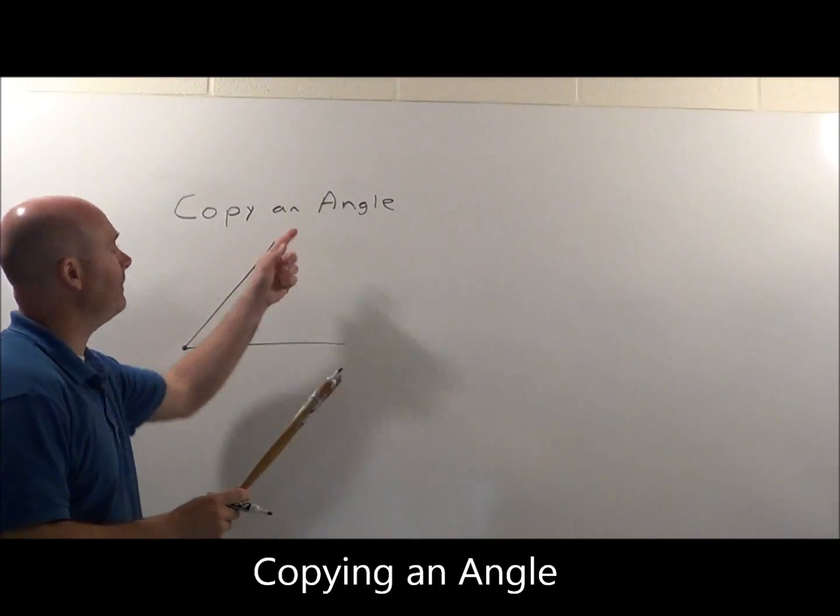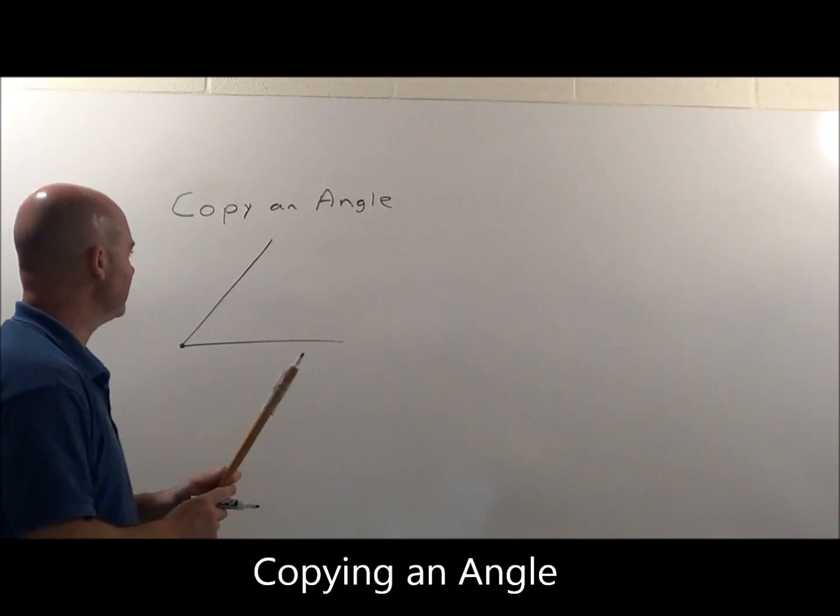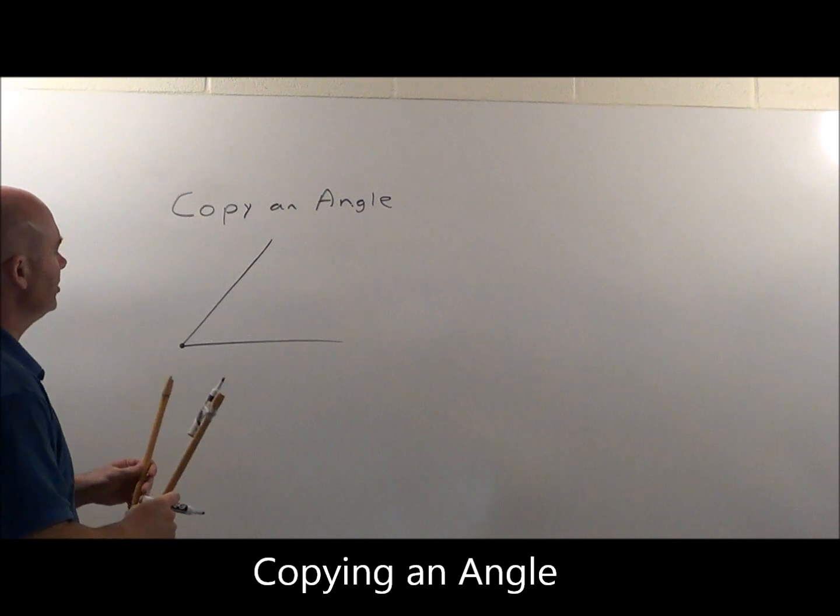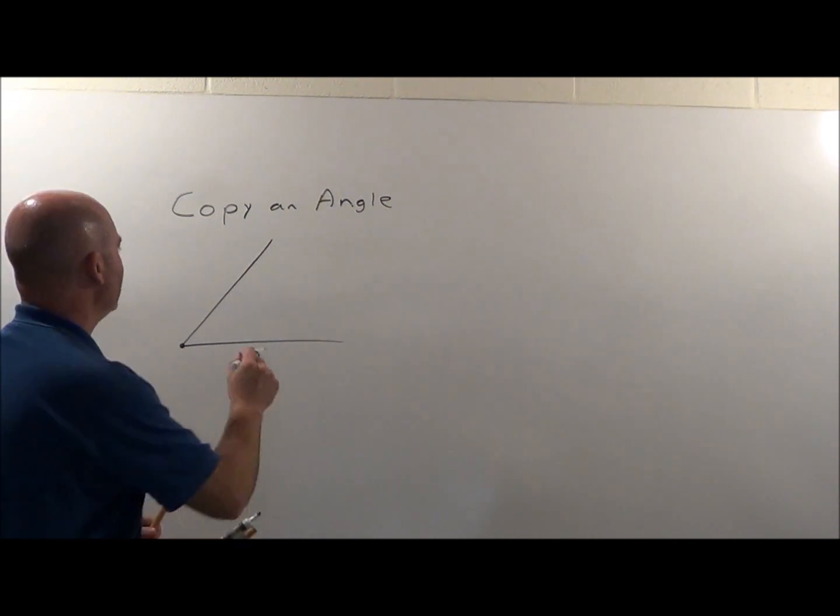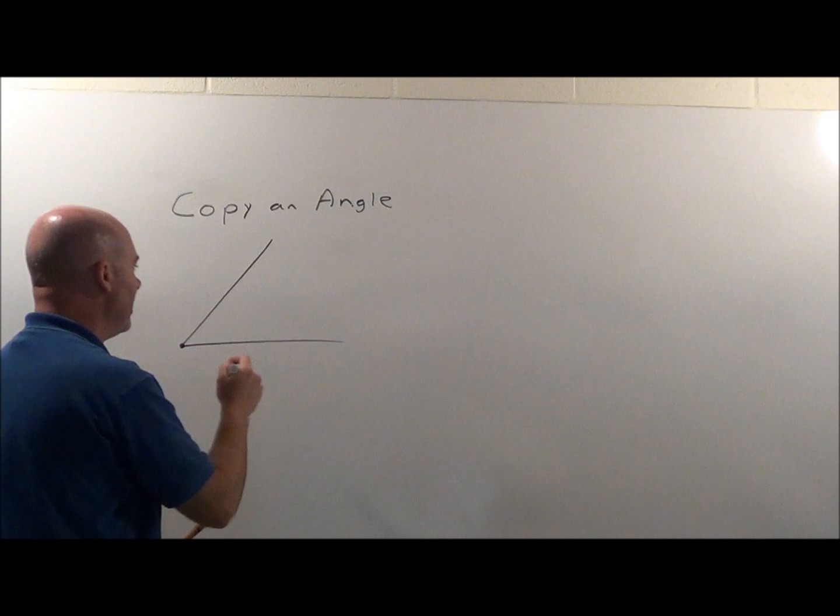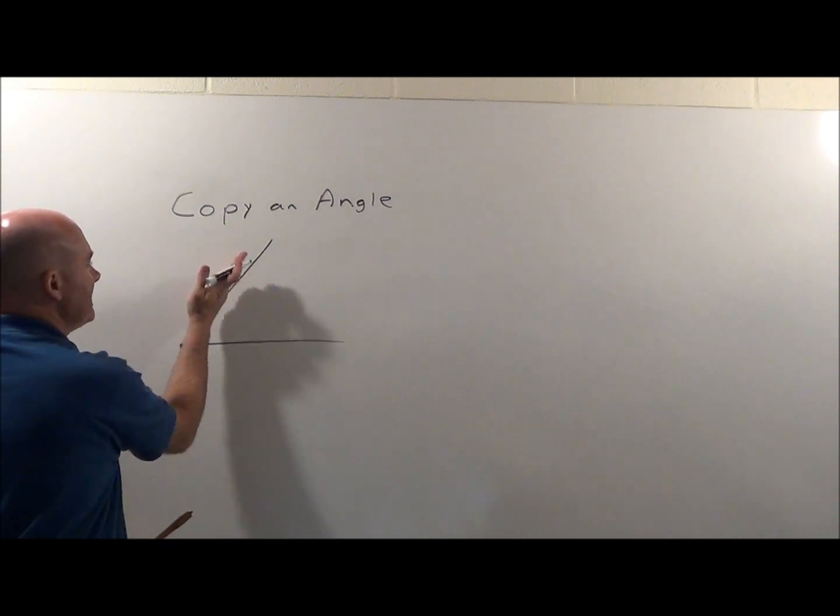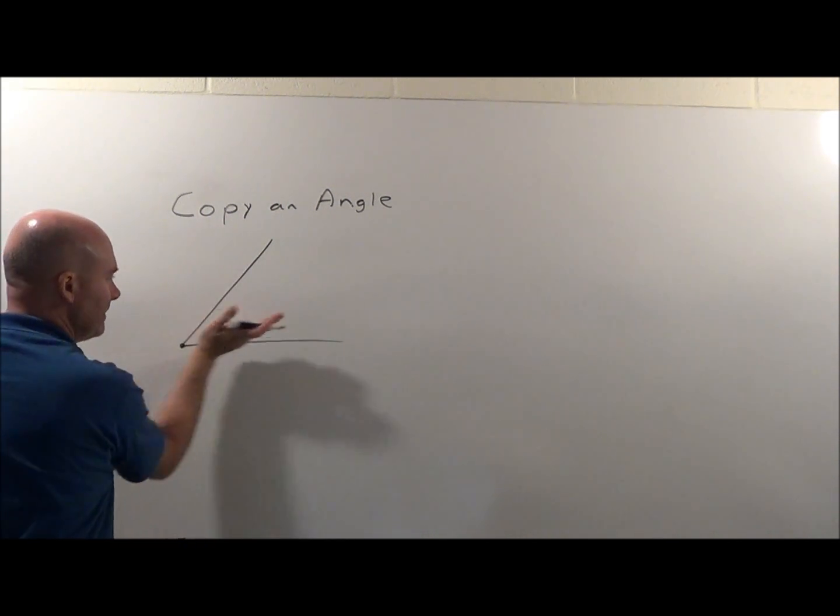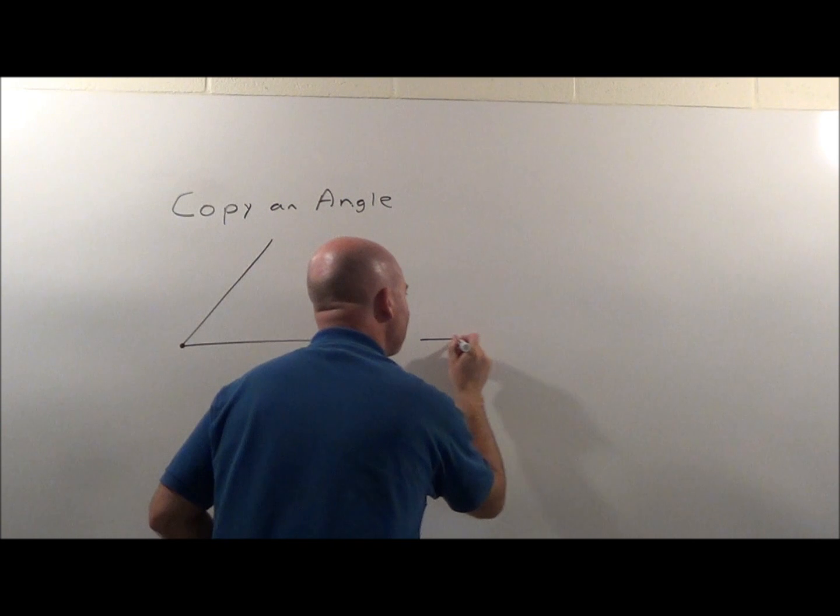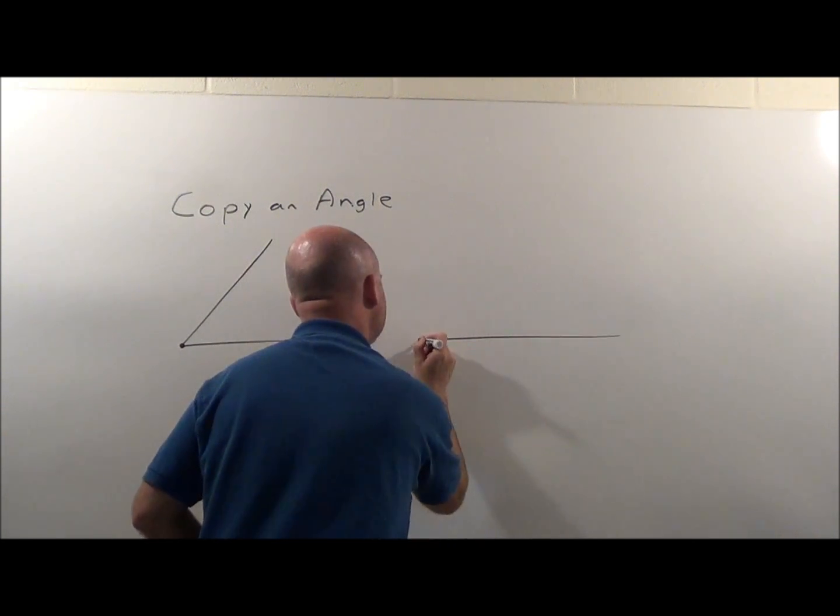Now what we're going to do is copy an angle using our compass. The first thing to do is I want to copy this angle. Now it's going to be hard to get exactly what that side is, but I can go ahead and draw a straight line here.